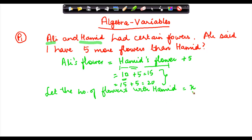So x can be a variable. X can have any number: one, two, three, four, five, and so on. So then how do I compute Ali's flowers? Ali equals x, which is Hamid's flowers, the number of flowers which Hamid has, plus five.